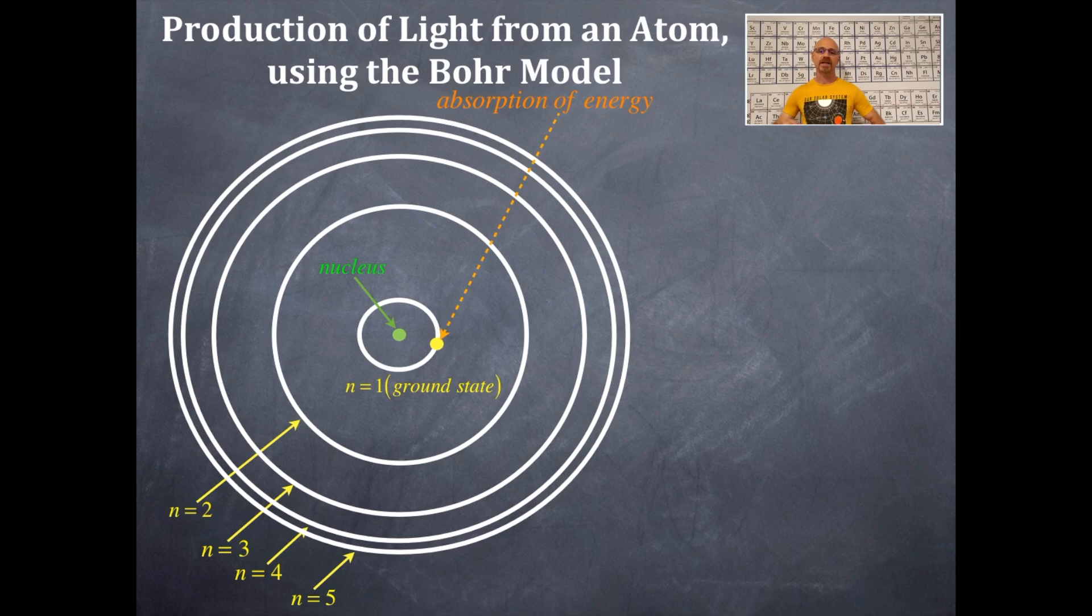That electron can move in a variety of different places. So, see that one electron that this has, and this would be like hydrogen since there's only one electron. That one electron can move in a variety of different places depending on how much energy it absorbed.